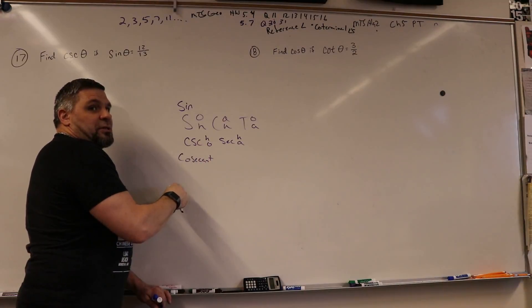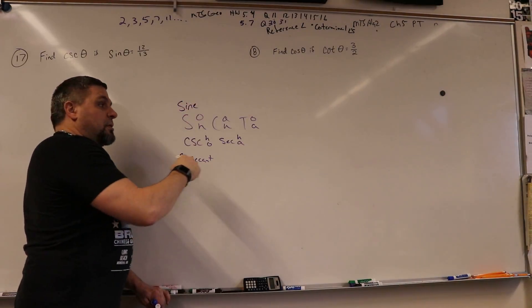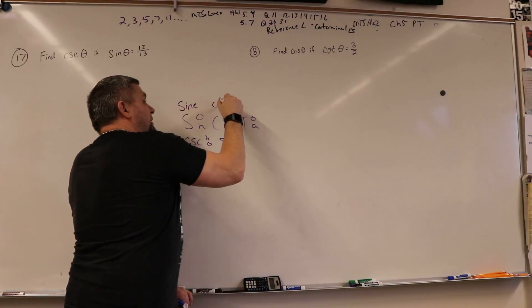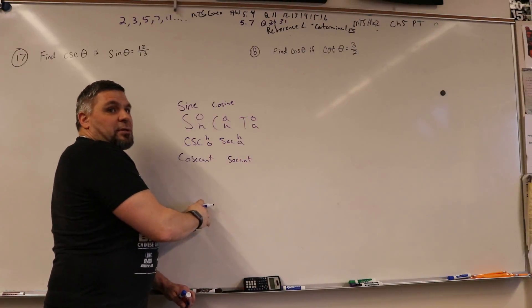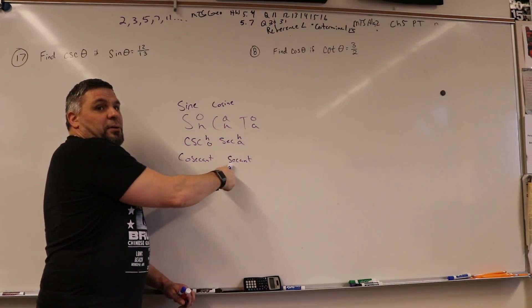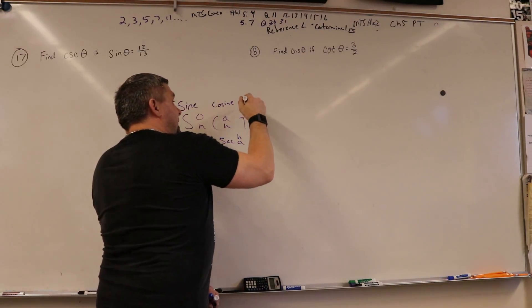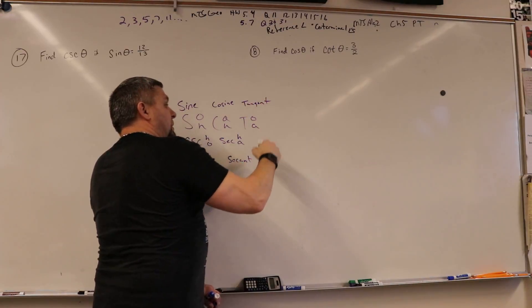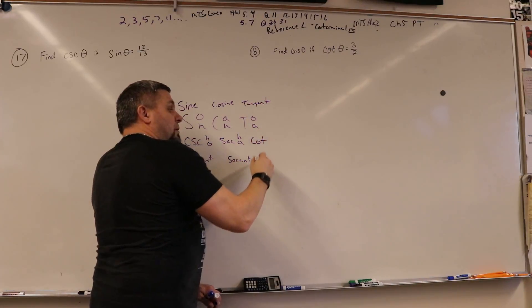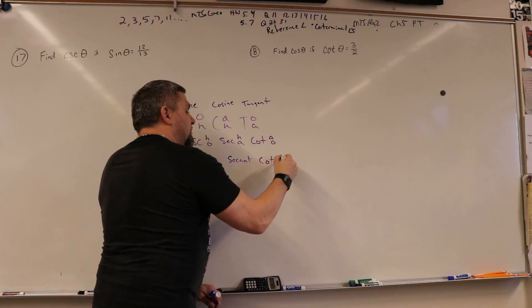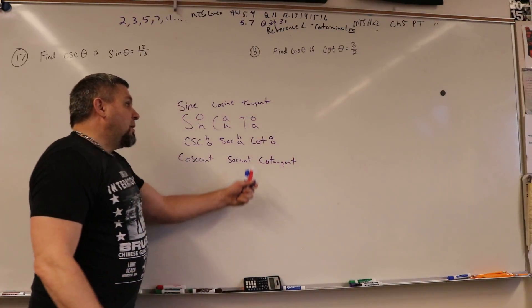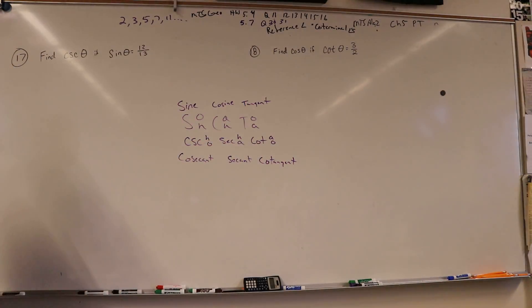So co, no co. This one's cosine and this is secant. Co, no co, right. Tangent and this one's cotangent, which is adjacent over opposite. But cotangent, so again, co, no co. And so that's how I try to remember them, is co, no co. So it's just opposite of the original.